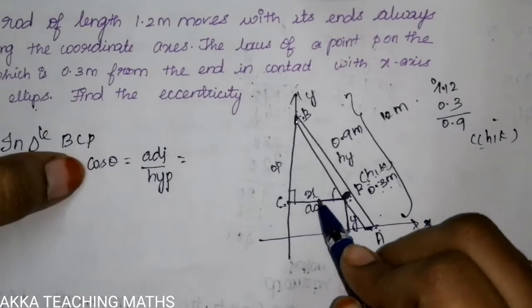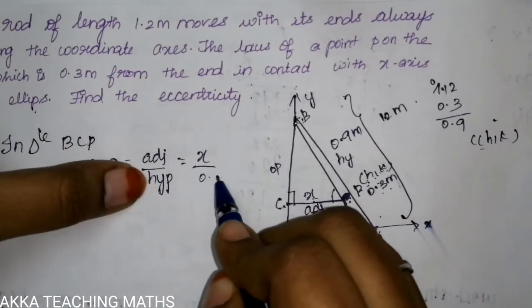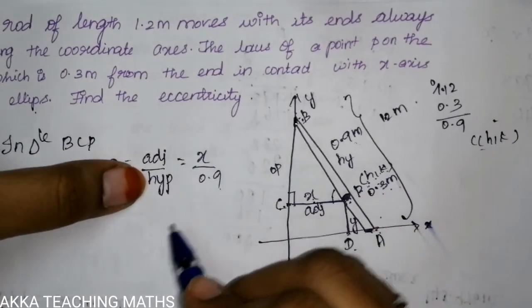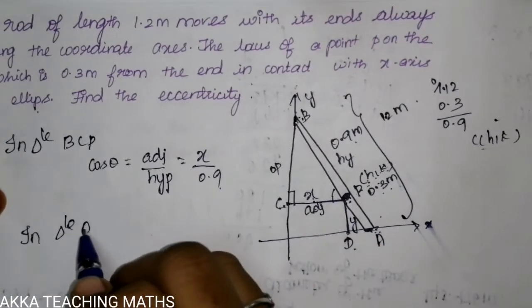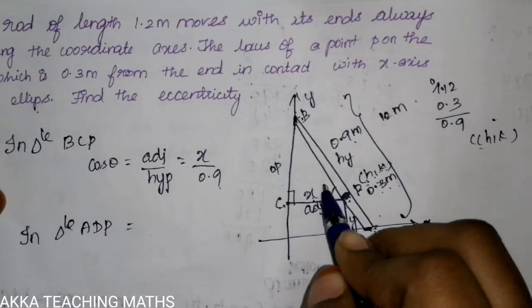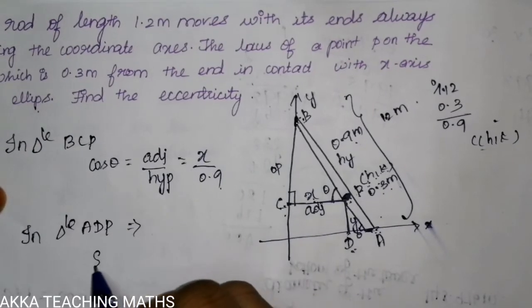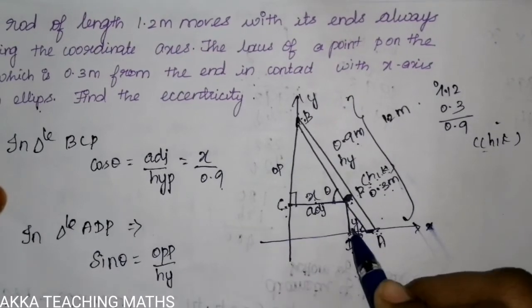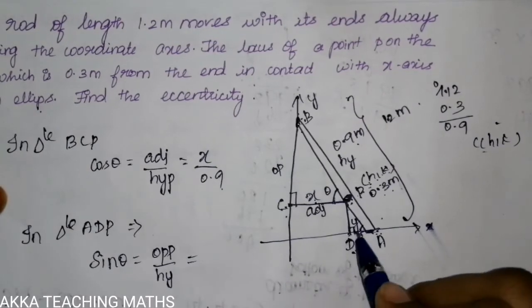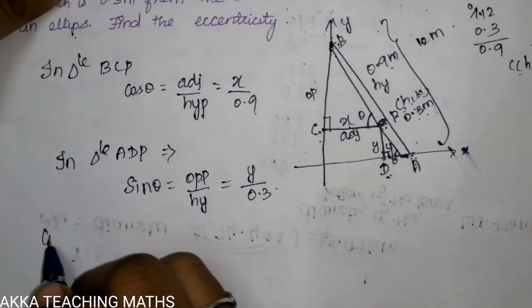In triangle ADP, the angle is theta. So sine theta equals opposite side DP divided by hypotenuse PA. The opposite side DP has value y, and the hypotenuse PA is 0.3. Similarly, cosine theta is derived from triangle BCP.